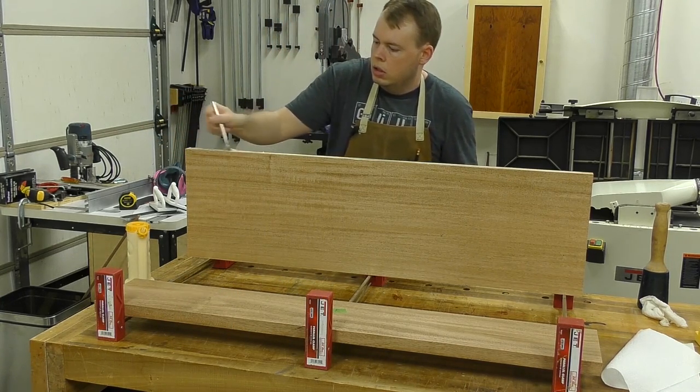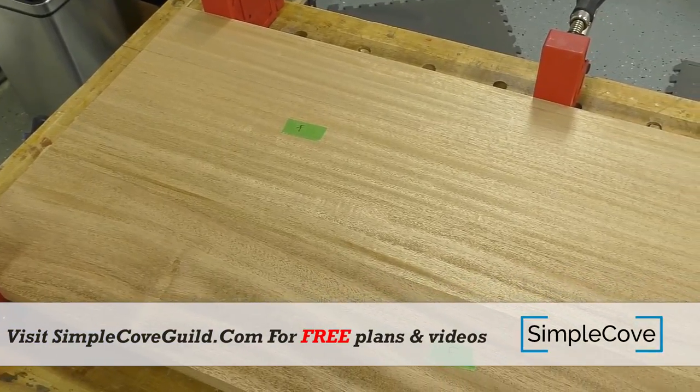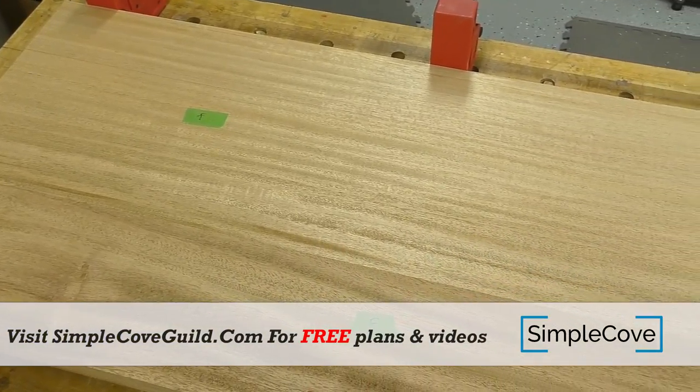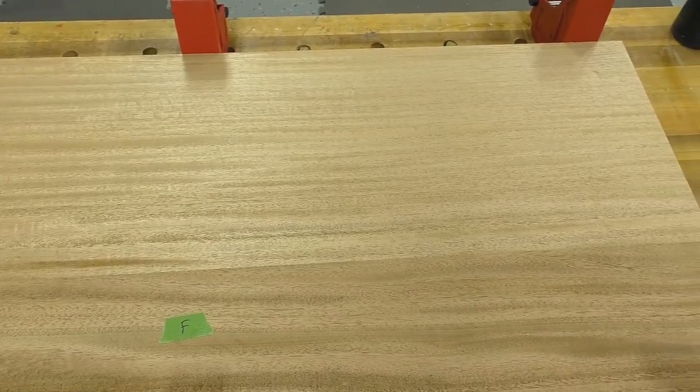When gluing up the panels, I like to orient the grain so that the glue lines disappear once it's dried. You want your panels to look like one big board instead of two boards glued together.